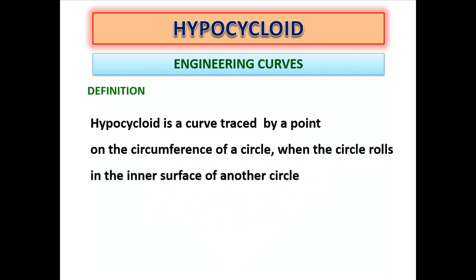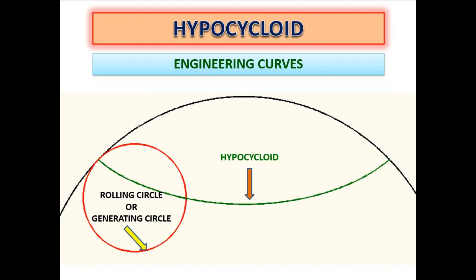The moving circle is called the rolling circle or generating circle. The fixed circle is called the directing circle or base circle.